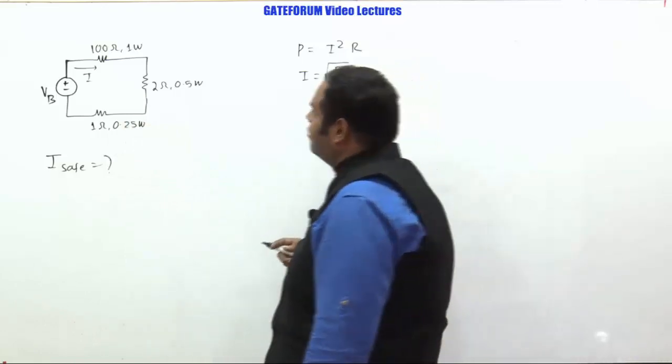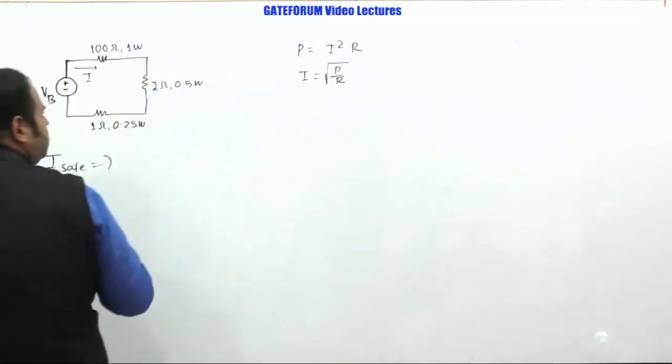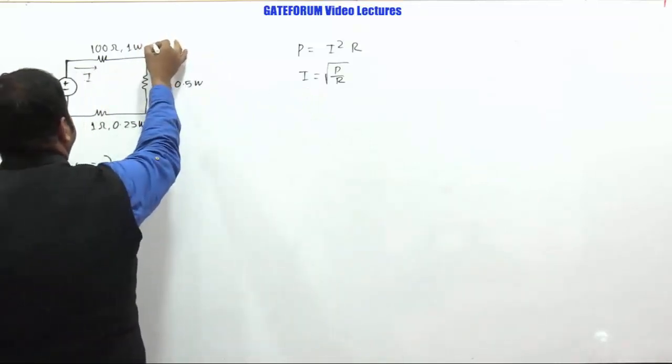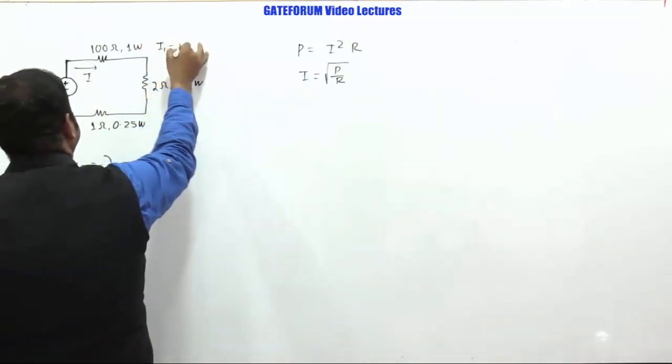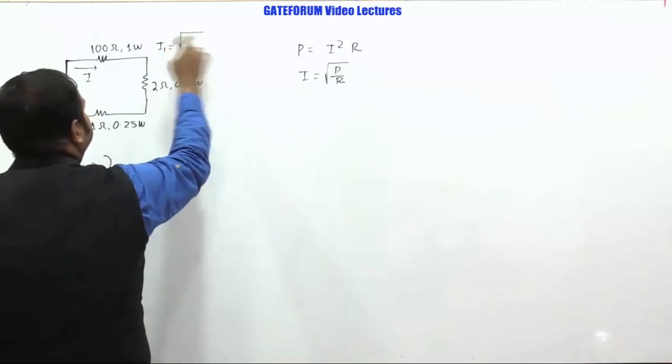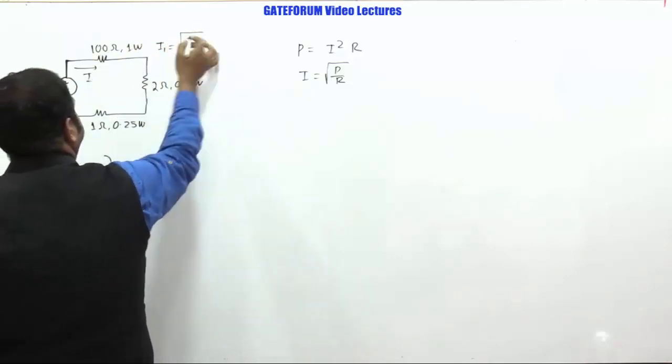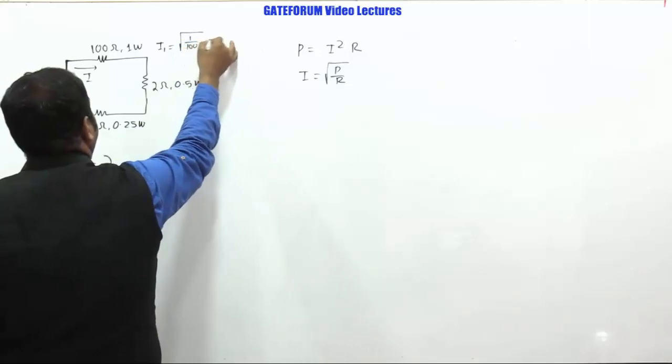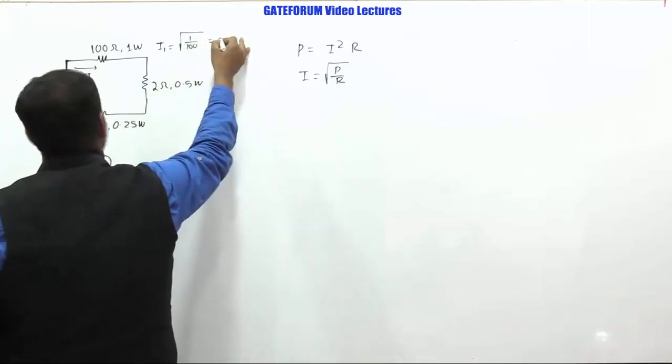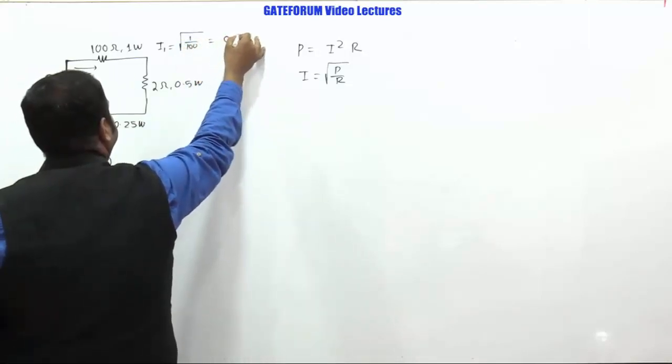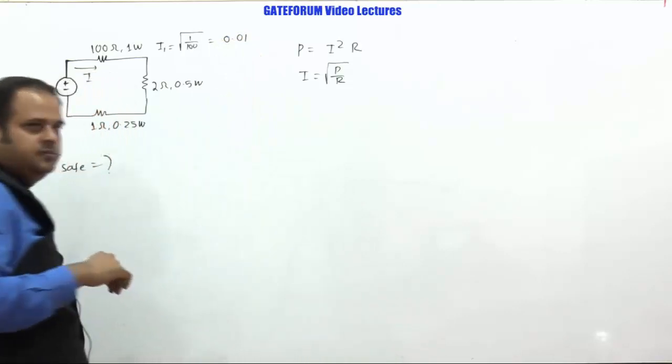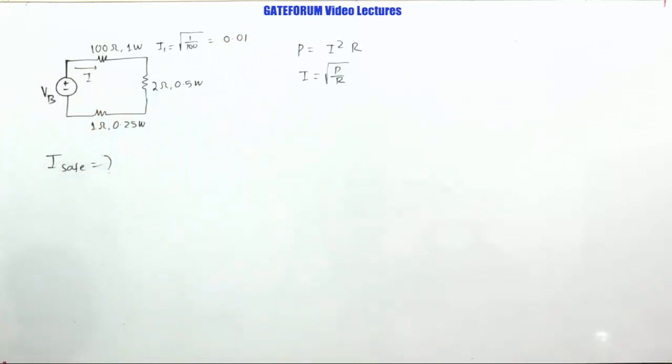So let us calculate this value of I for each of these three resistors. If I calculate for this, let me call this is I1. So this happens to be square root of P by R. P is 1, R is 100. So 1 by 100 happens to be 1 by 10 square root. So it would be coming 0.01.